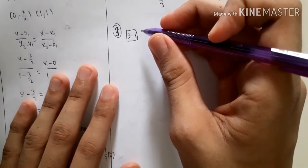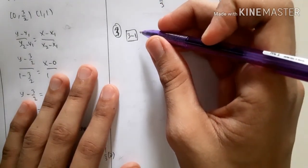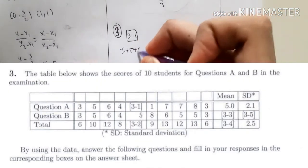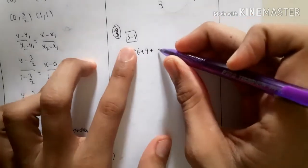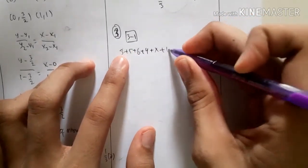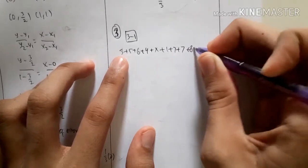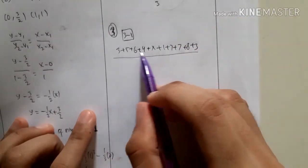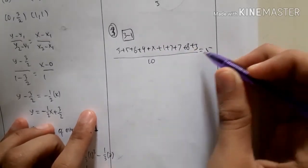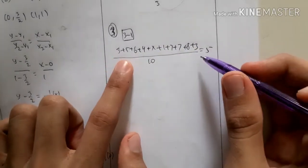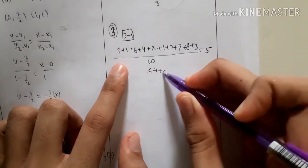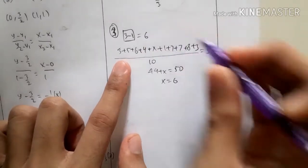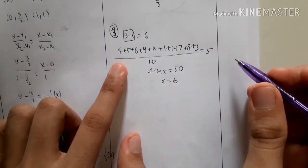Box 3-1 is in the data for Question A, and we have the mean, so we calculate: 3 + 5 + 6 + 4 + x + 1 + 7 + 7 + 8 + 3 over 10 equals 5. That gives us 44 + x = 50, so x = 6. Box 3-1 is 6.